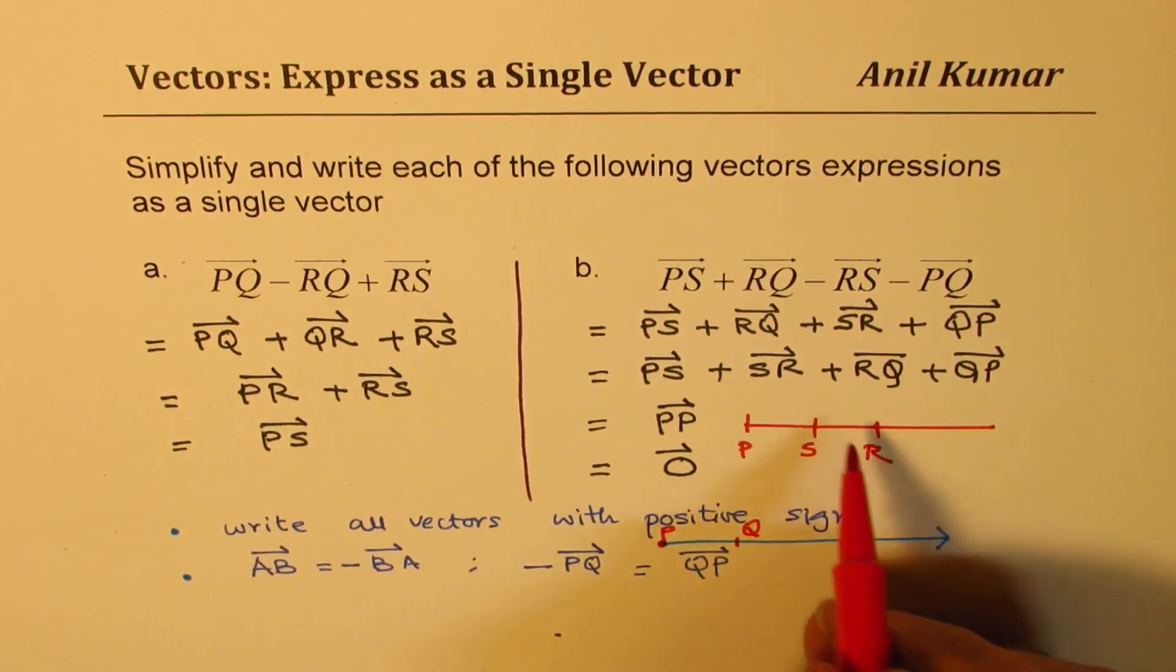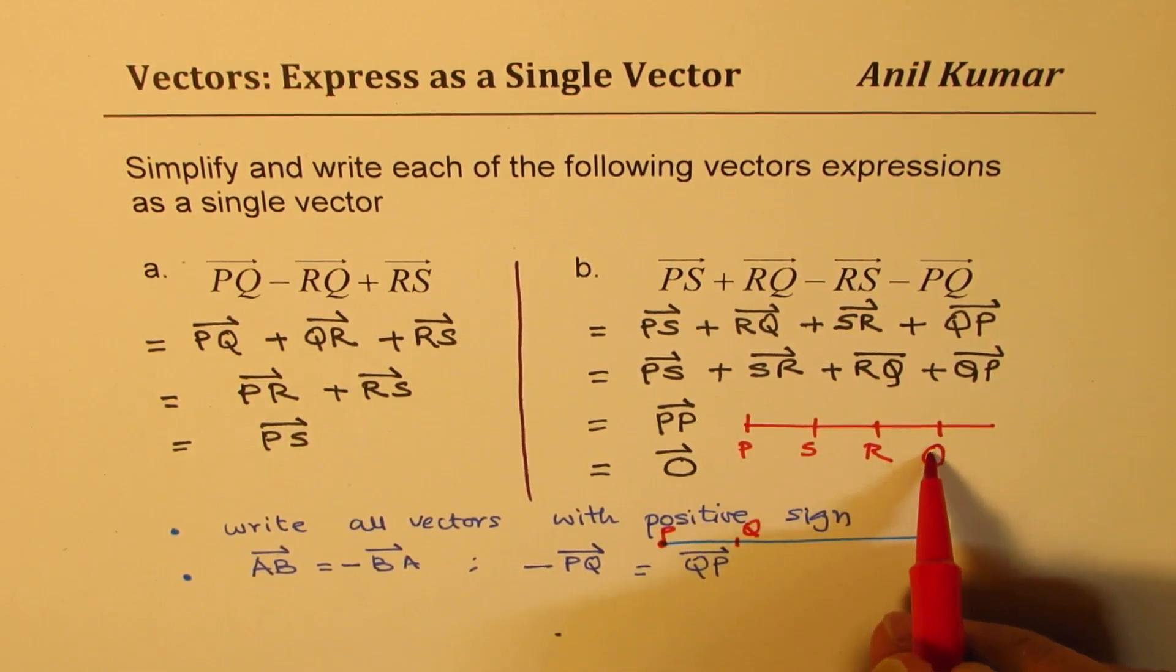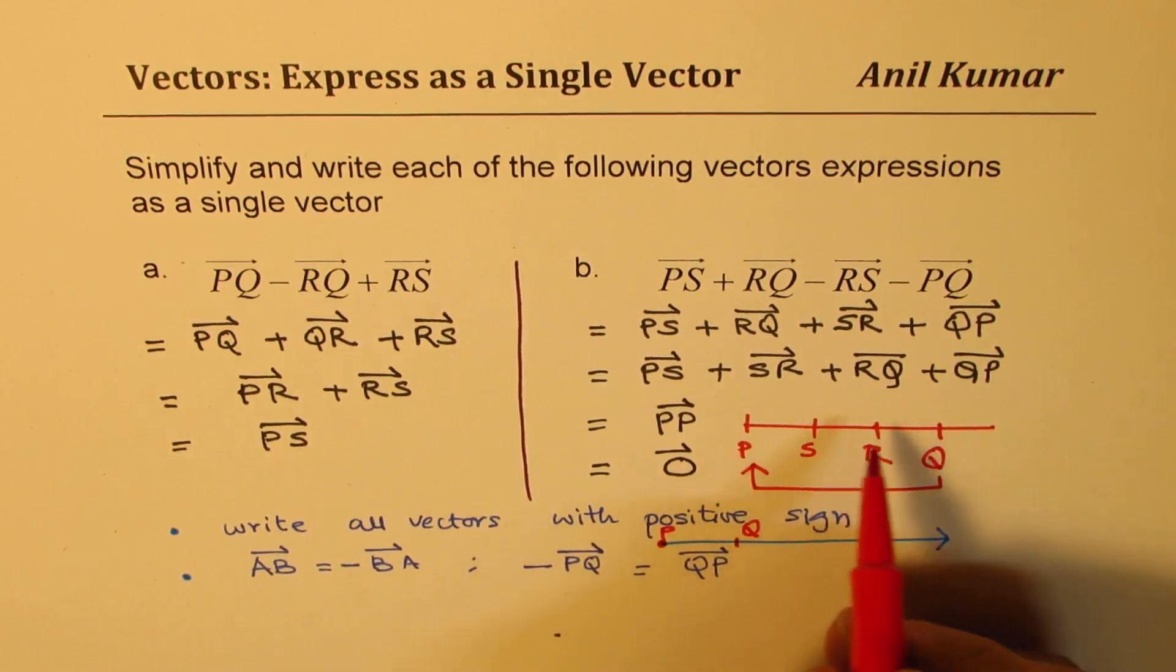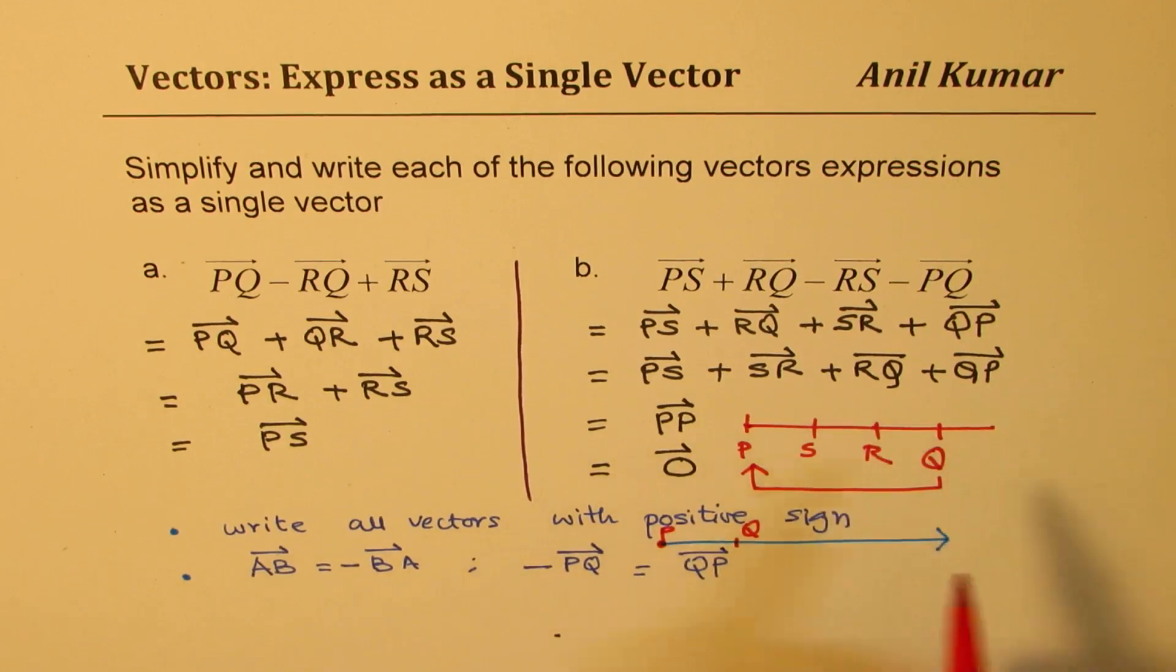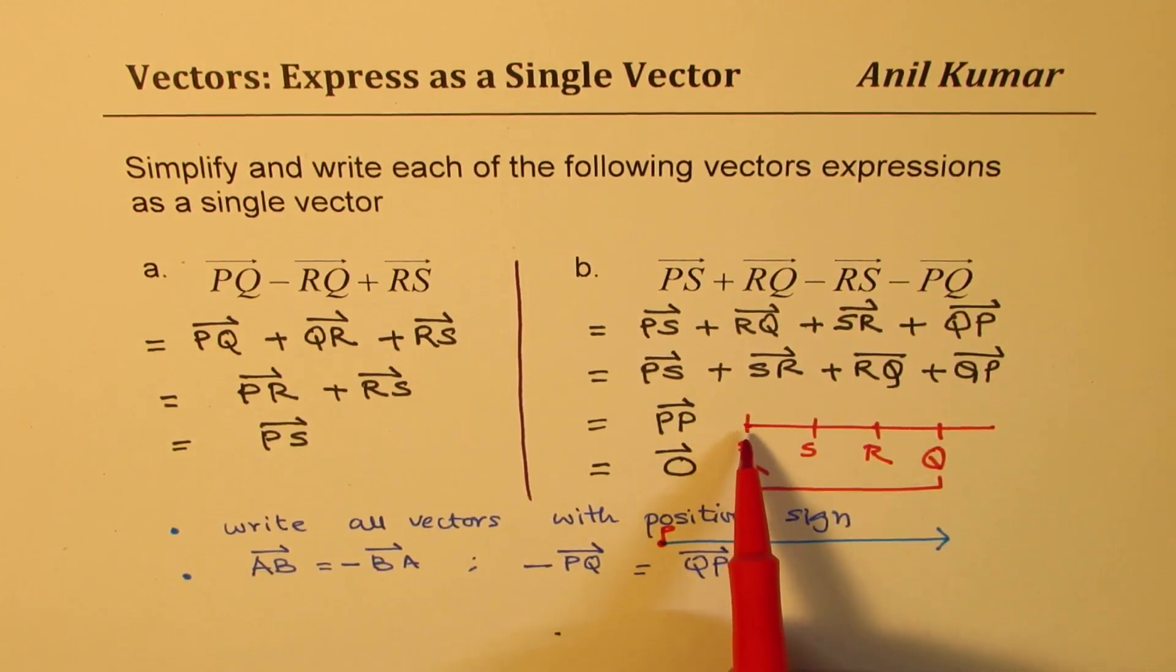And then from R, we are going to Q. And then from Q, we are returning back to P. Do you see that? So the vector is difference between the final and initial position, which is exactly the same. Therefore, it is a zero vector. Perfect.